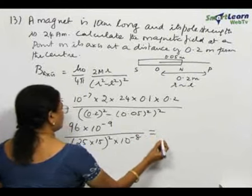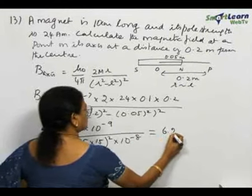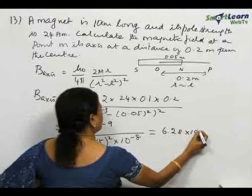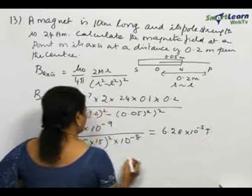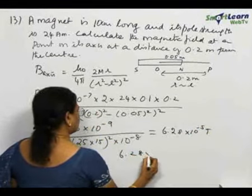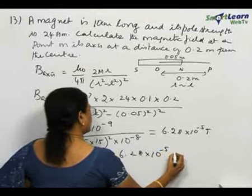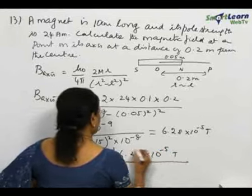This is simplified as 6.28 × 10⁻⁵ tesla. So, the answer is 6.28 × 10⁻⁵ tesla.